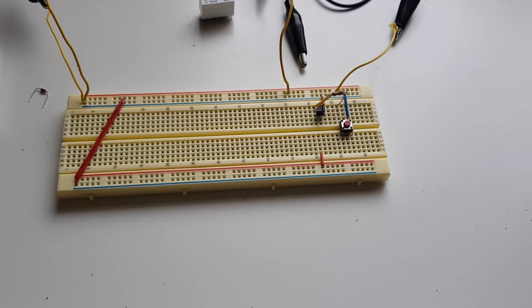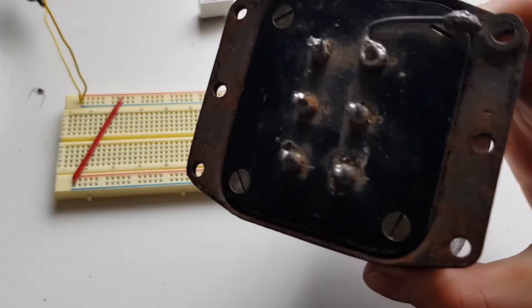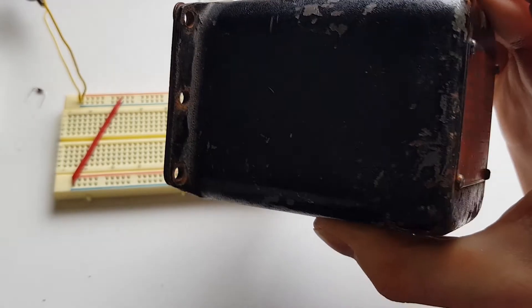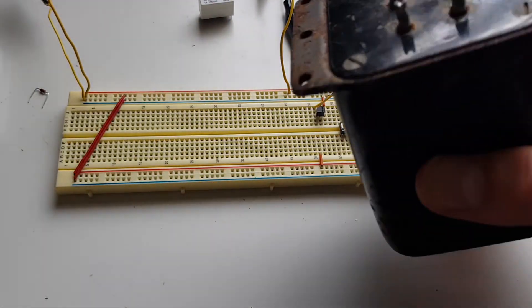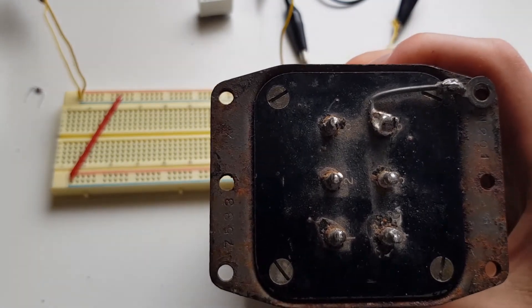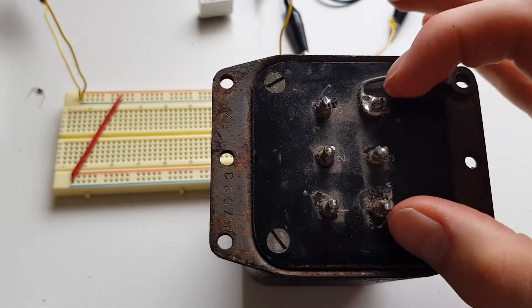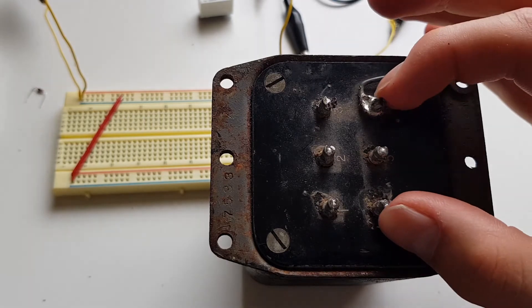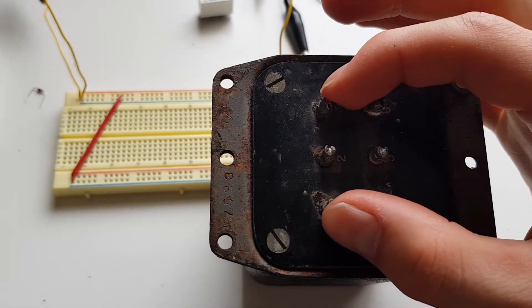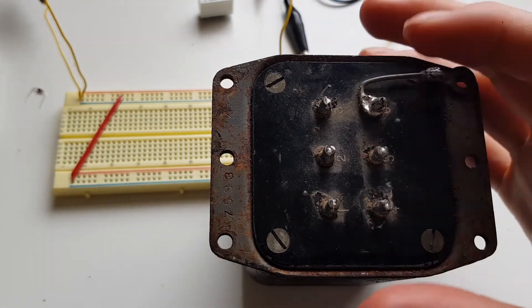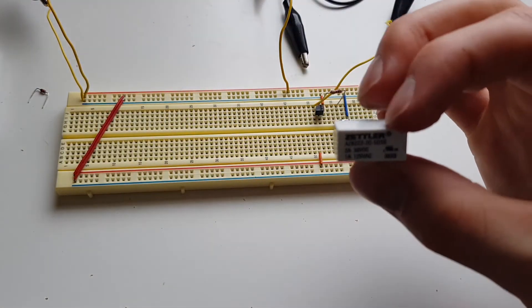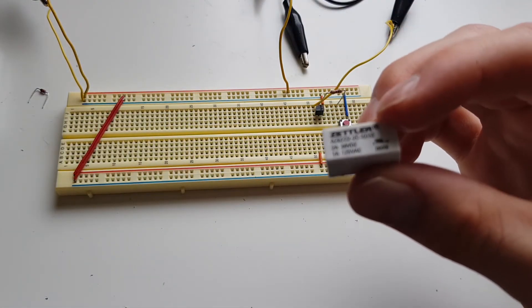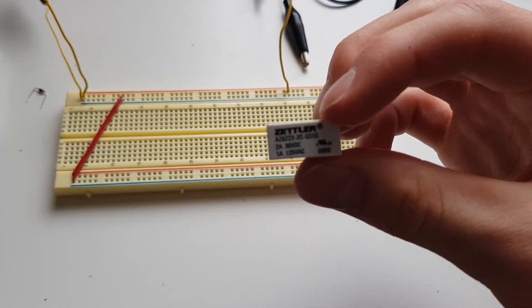Alright, so what I've got here is an interstage transformer from a tube amplifier. Now, it is a transformer, but each side of this thing has 5 Henry's of inductance. Which, if you don't know, that is a lot of inductance. This little relay here probably has an inductance, actually I measured it, it's about 100 millihenry's.